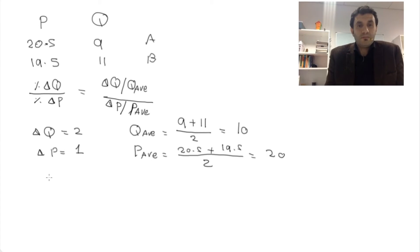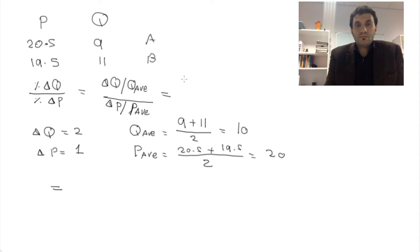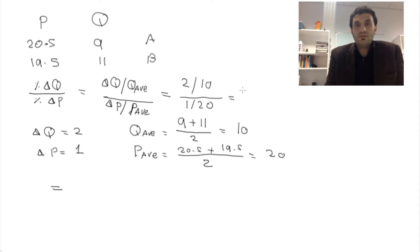Now we have everything we need to calculate the price elasticity of demand. It's the change in quantity (2) divided by the average quantity (10), divided by the change in price (1) over the average price (20). This gives us a price elasticity of demand of 4.